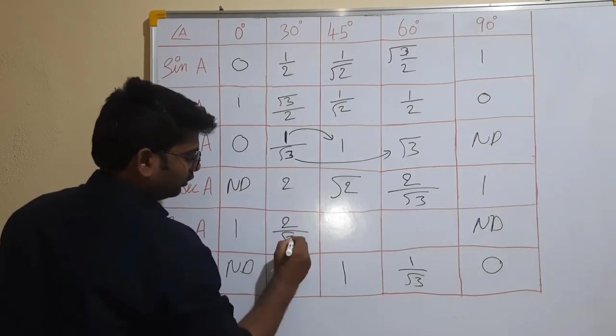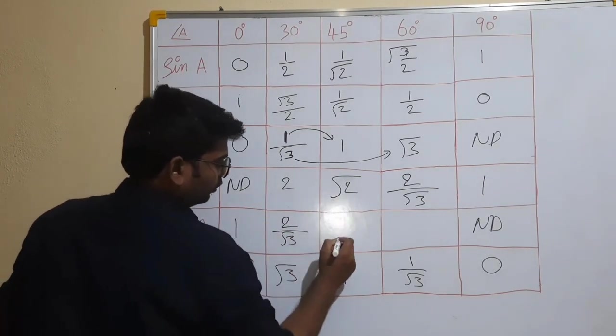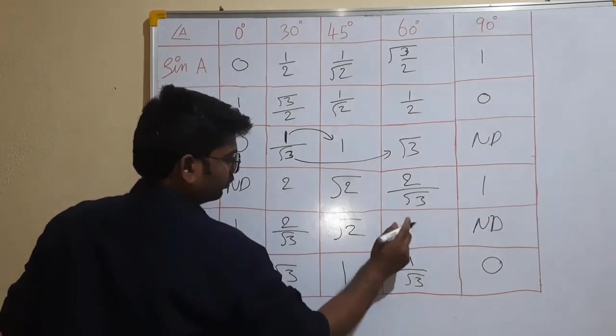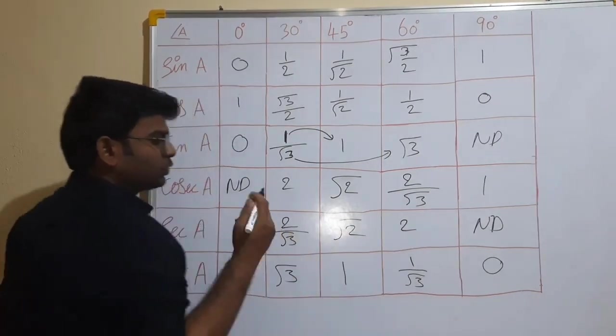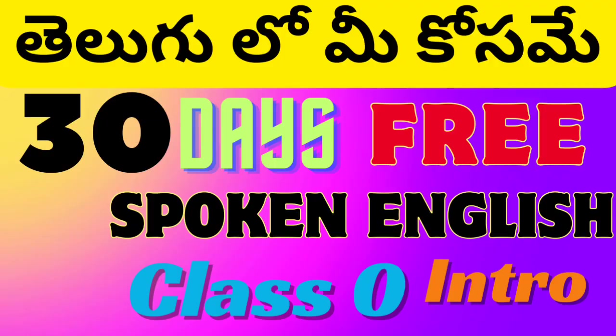Second entry is the reverse. 2 by root 3, root 2, 2. So strings reverse. Like subscribe. My videos, my channel follow. Bye.